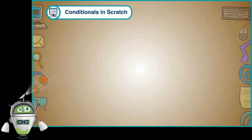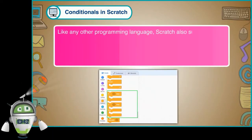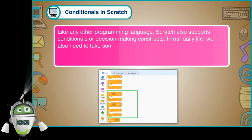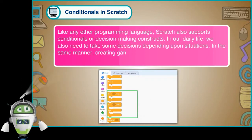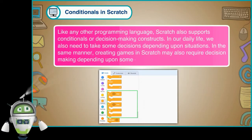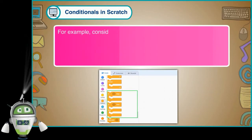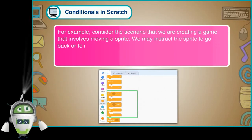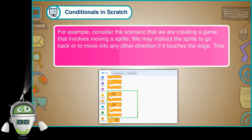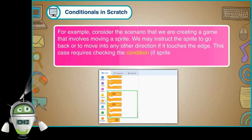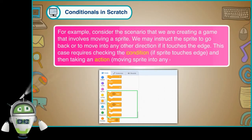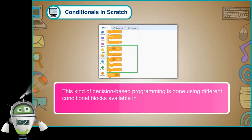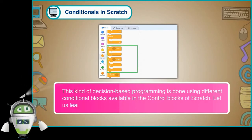Conditionals in Scratch: Like any other programming language, Scratch also supports conditionals or decision-making constructs. In our daily life we also need to take some decisions depending upon situations. In the same manner, creating games in Scratch may also require decision-making depending upon some conditions. For example, consider a game that involves moving a sprite — we may instruct the sprite to go back or move in another direction if it touches the edge. This kind of decision-based programming is done using different conditional blocks available in the control blocks of Scratch.